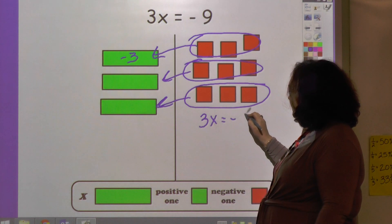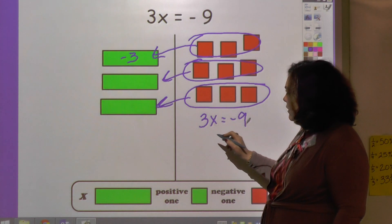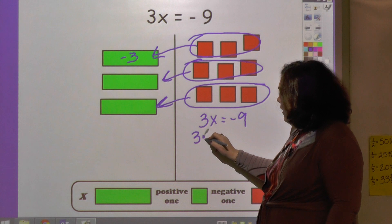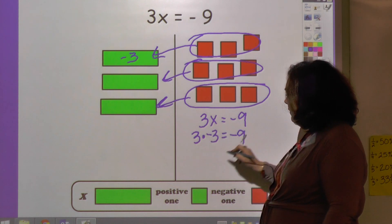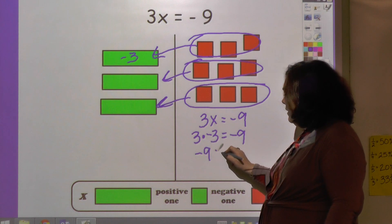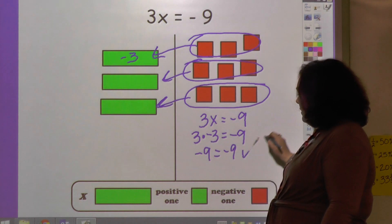So let's put it in. 3x equals negative 9 is my equation. 3 times negative 3, the answer that I found, equals negative 9. And negative 9 equals negative 9, so it's a big check.